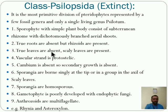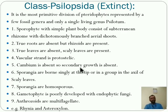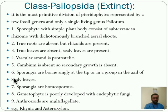Third, true leaves are also absent, but scaly leaves are present. Vascular strand is protostelic — it is present but is primitive. Cambium is absent, so secondary growth is also absent. Next, sporangia are borne singly at the tip or in a group in the axil of the scaly leaves. Those sporangia are homosporous.